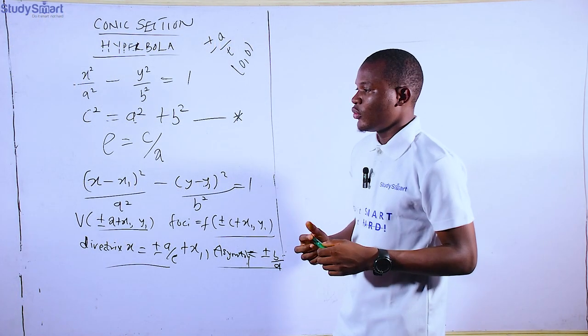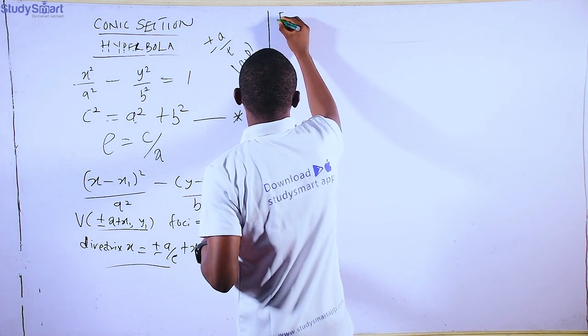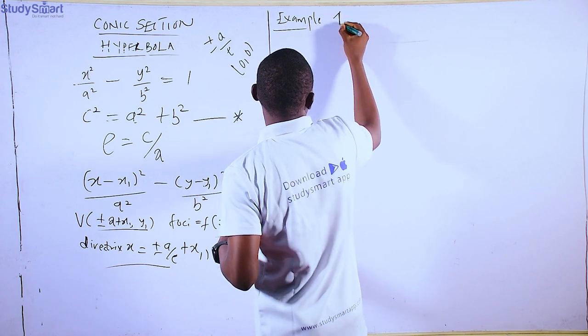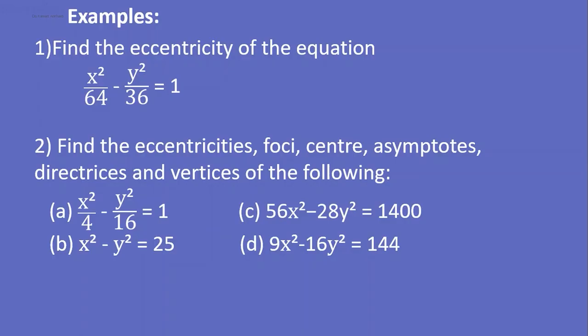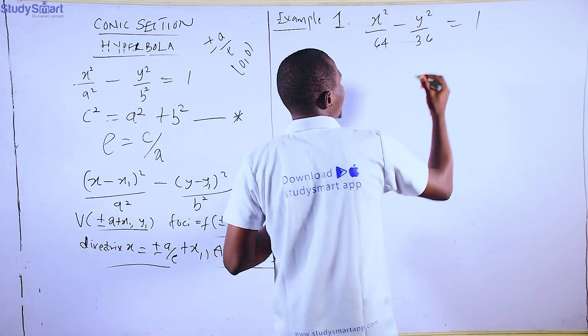Let's look at the first example on this slide: we want to find the eccentricity of the equation x²/64 − y²/36 = 1. You can see that since what we have here is a negative sign between the terms, this is telling us that this equation is a hyperbola.